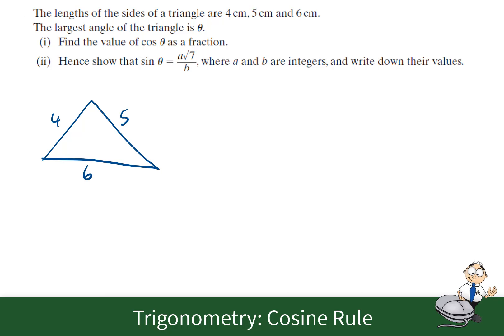If you had a ruler, maybe make it a bit neater. It's not a right angle triangle, I'll comment on this. The largest angle, that would be the one across from 6, is theta. Find the value of cosine theta as a fraction.